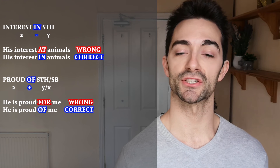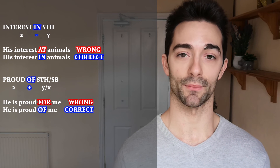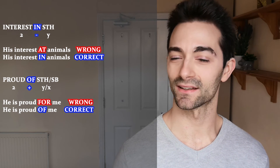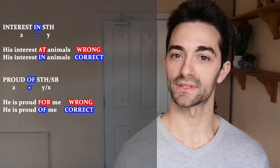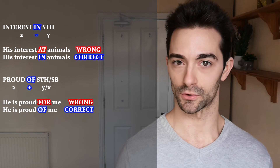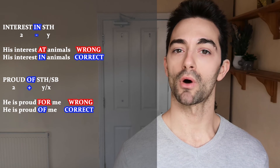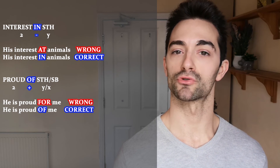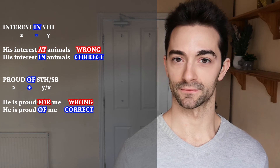The same mathematical approach applies to nouns and adjectives. If we look up the noun interest, we find 'interest in something'. So we can't say 'his interest at animals', but 'his interest in animals'. You are proud of somebody, so: he is proud of me.